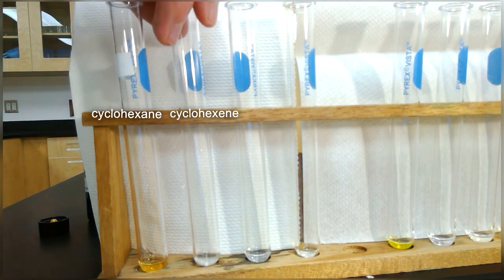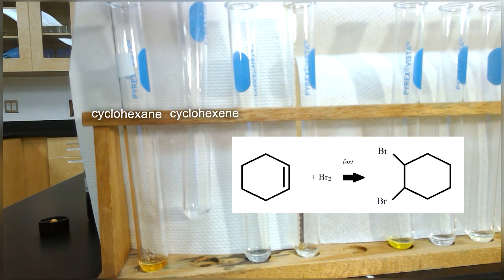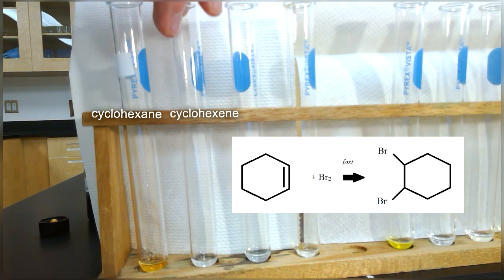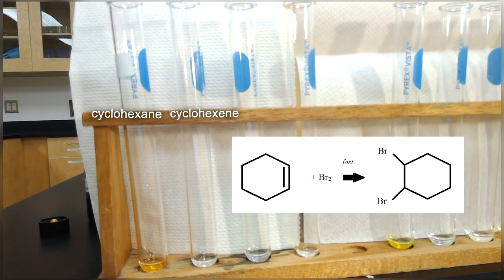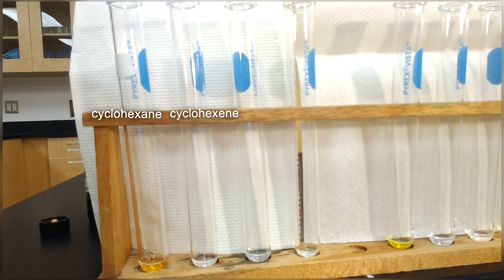Whereas if we have a look at cyclohexene, it is definitely decolorized, which means that the BR2 molecule has split apart. It has found its way to the double bond in the molecule and broken the double bond and added itself into the structure of the cyclohexene to form 1,2-dibromo cyclohexane.